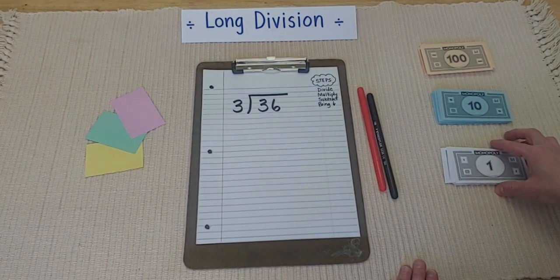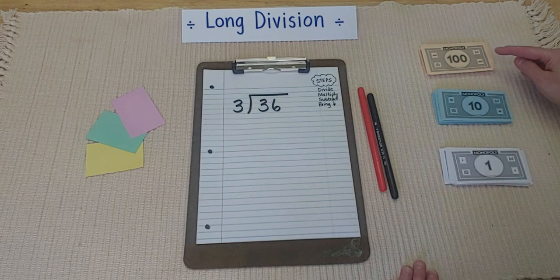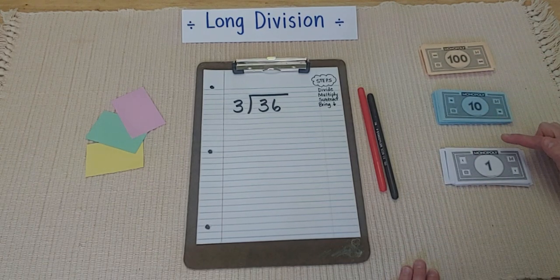And if you don't have play money, you can make your own. Just make sure that you label them 100, and tens, and ones.